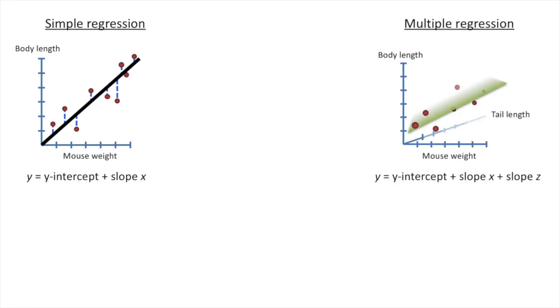In that same StatQuest, I also showed you how to fit a plane to data. Well, that's what multiple regression is. You fit a plane or some higher dimensional object to your data. A term like higher dimensional object sounds really fancy and complicated, but it's not. All it means is that we're adding additional data to the model.